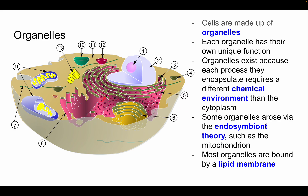Some organelles arose via the endosymbiont theory, such as the mitochondrion, which we'll get into. Most organelles are bound by a lipid membrane, such as the mitochondrion.